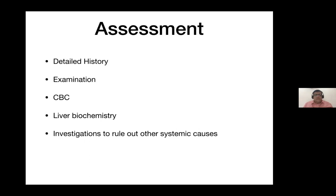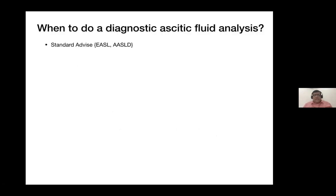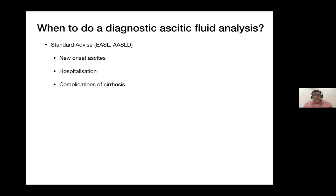Assessment of ascites starts with ascitic fluid analysis. When should you do a diagnostic ascitic fluid analysis? EASL recommends grade 2 and 3 new onset ascites; AASLD recommends all new onset ascites. For me, all patients with significant new onset ascites should be investigated. Grade 1 minimal interbowel fluid that is non-tappable can be ignored. All hospitalized patients require a diagnostic tap, as does anyone presenting with a fresh complication of cirrhosis — GI bleed or hepatic encephalopathy.